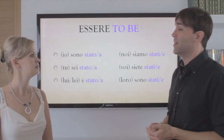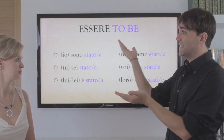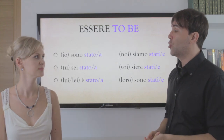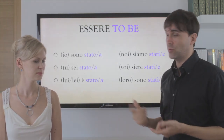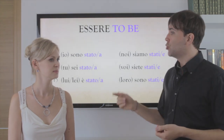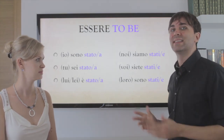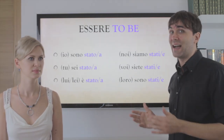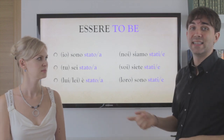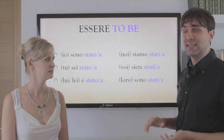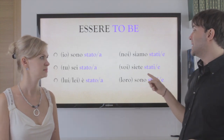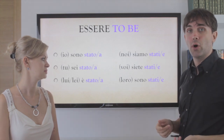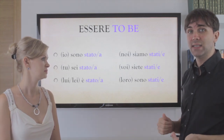Now let's do the passato prossimo of the verb essere — to be: io sono stato / sono stata, tu sei stato / sei stata, lui/lei è stato / è stata, noi siamo stati / siamo state, voi siete stati / siete state, loro sono stati / sono state.